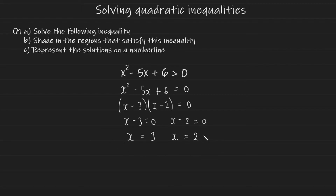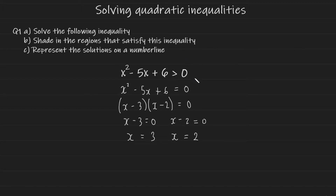Now we can take these roots and solve the quadratic inequality as follows. If your expression is on the left hand side of the inequality, and your quadratic expression is a positive one — so in this case our x squared is positive, therefore the quadratic expression is positive — and your zero is on the right hand side of the inequality, then the following rule applies.